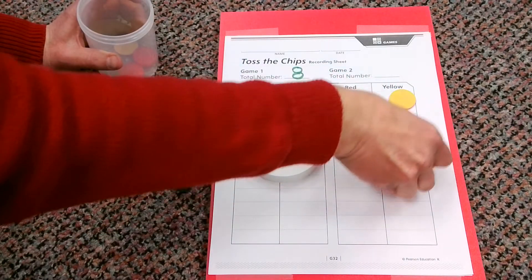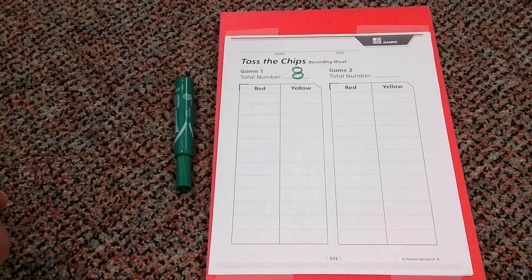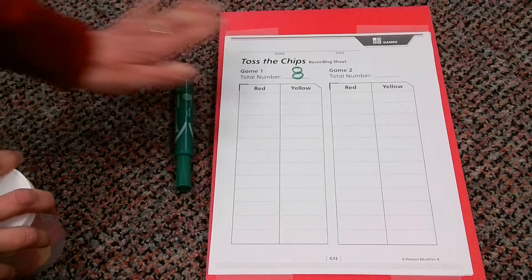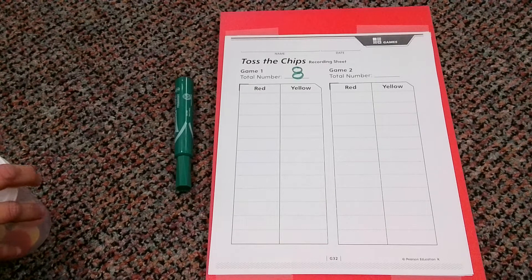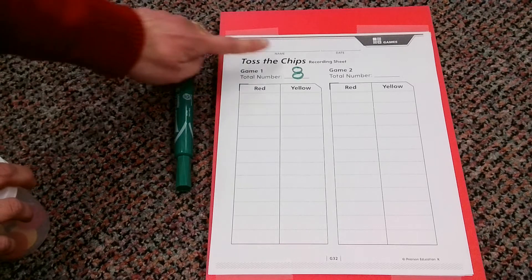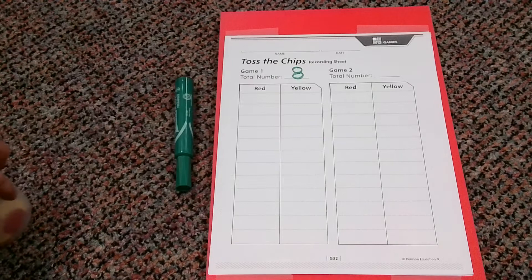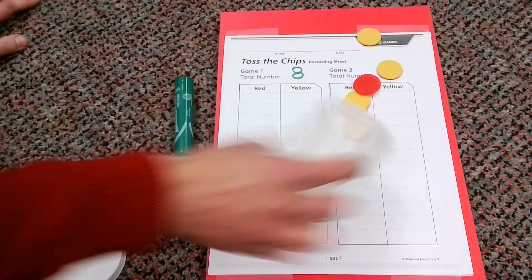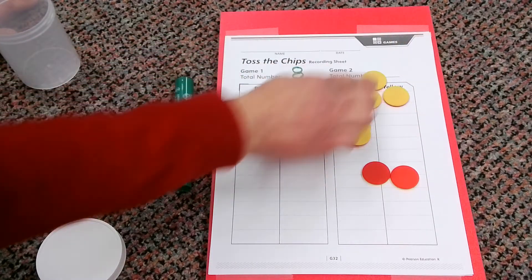What we're going to do is see how we can make different combinations of eight. We're going to do that by shaking up our chips, spilling them out, seeing how many red and how many yellow we have, and then we're going to see the start of a number sentence. All our number sentences are going to equal eight because we only have eight in our jar. So here we go, let's get started. I'm going to shake it up.